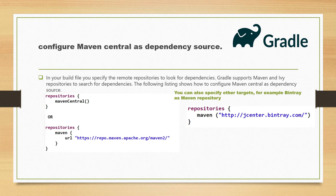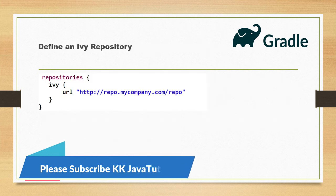Apart from that, you can also specify a Maven repository for Bintray. Inside the repositories section you can specify a URL for Bintray, which is essentially JCenter — and that is also supported by Gradle.